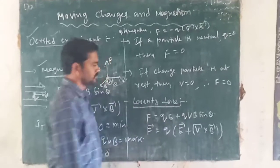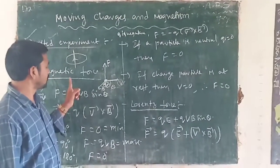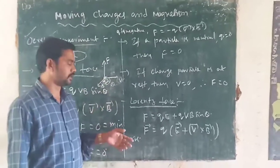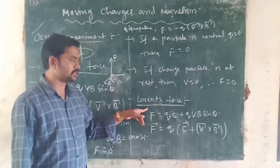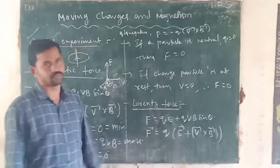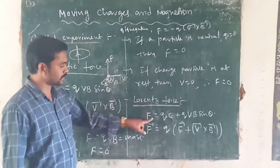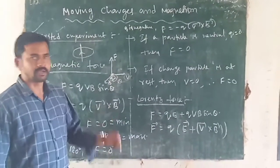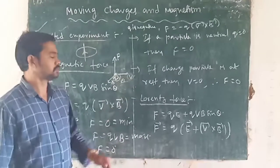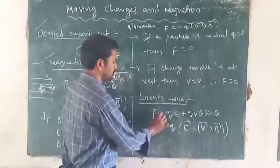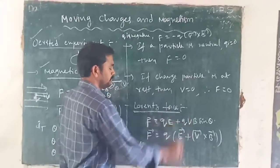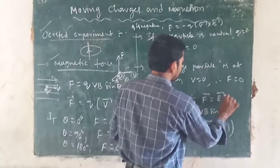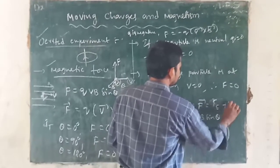Next: Lorentz force. What is Lorentz force? The force experienced by a charged particle placed in both an electric field and a magnetic field is called the Lorentz force. The formula is F = QE + QVB sin θ, where QE is the electric force. So F⃗ = electric force + magnetic force.